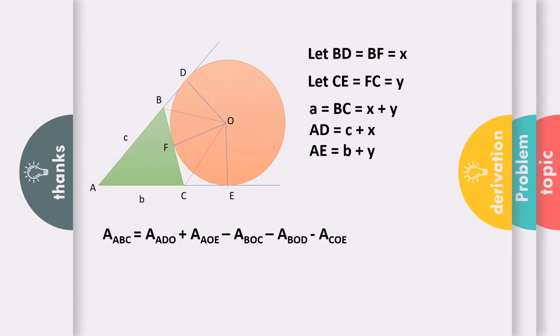Notice that all of them have R_A over 2. We can factor this out. When we factor out R sub A over 2, inside we get (c + x) + (b + y) - (x + y) - x - y. We can cancel one x minus x, which zeros out. We can also cancel y minus y. What remains is R sub A all over 2 times the quantity (c + b - x - y). Minus x minus y is like minus (x + y). Since x + y equals a, we can replace it with R sub A over 2 times (c + b - a).